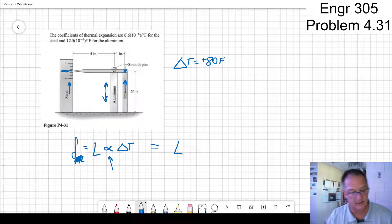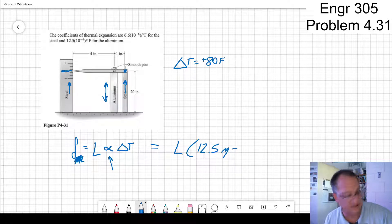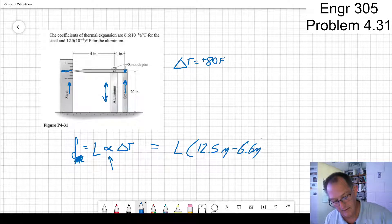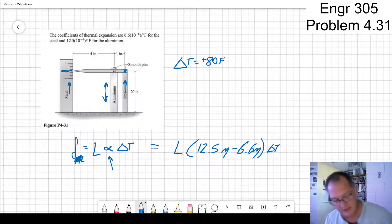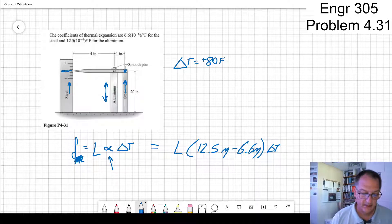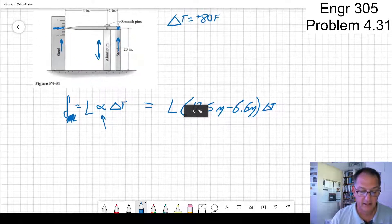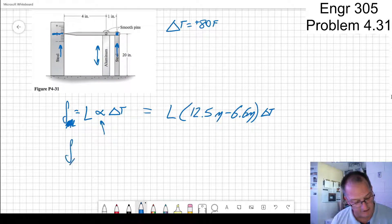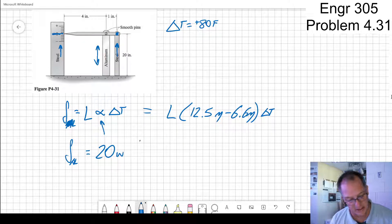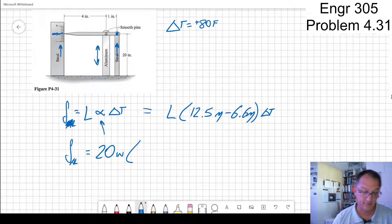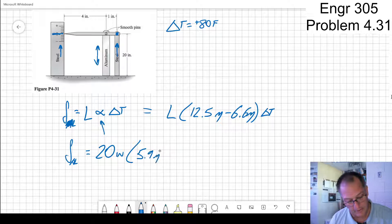Sorry about that. 12.5 micro minus 6.6 micro. That's the difference or the net that that changes times delta T. And then the next step. So I could calculate that. The delta aluminum is equal to 20 inches times, that's going to be, what, 5.9 micro times 80 Fahrenheit.